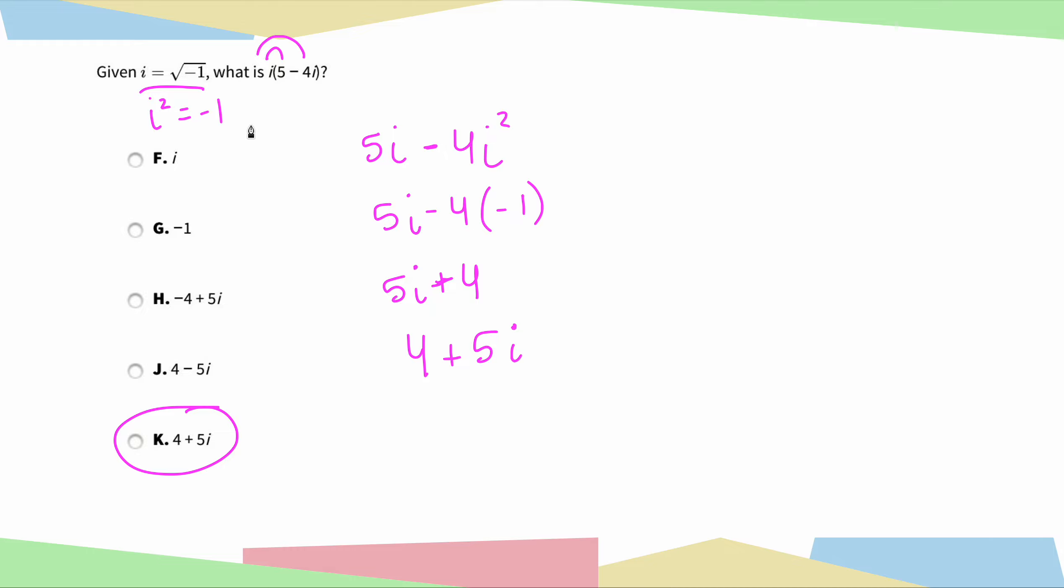Remember, complex numbers have both real and imaginary parts. So I pretty much would have known from the very beginning when I did i times 5 that I'm going to have a positive 5i attached. So I really could have eliminated these three answer choices from the very start. And then I could have proceeded to figure out that it was going to be a positive 4.